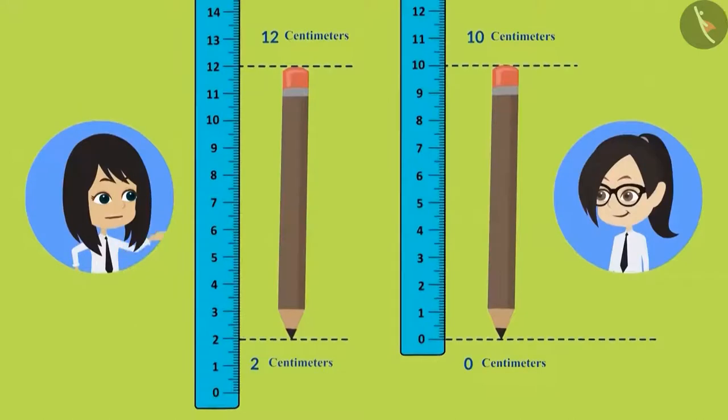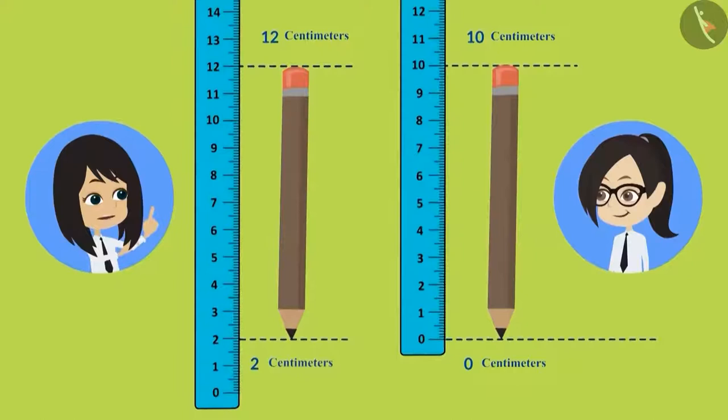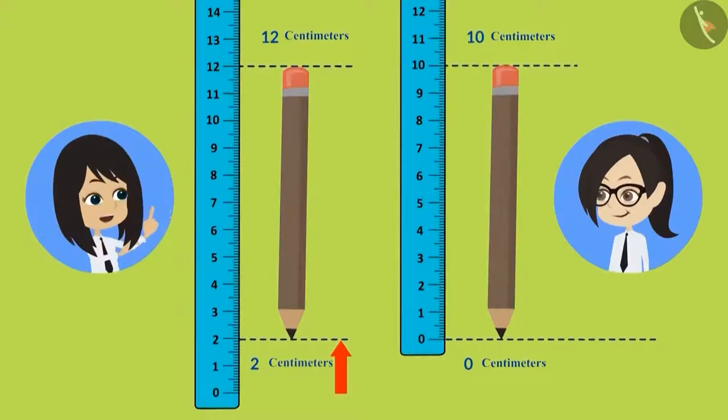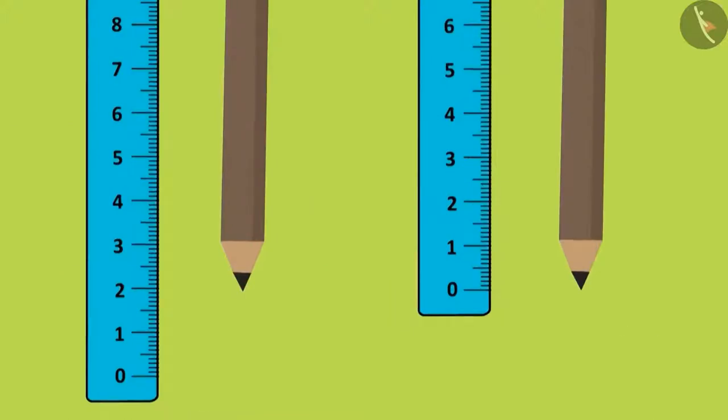Oh! I understand now. The problem with keeping the pencil at 2 centimeters is that there is no pencil from 0 centimeters to 2 centimeters, and I included that length as well in the measurement. Now I will correct it. I will keep the pencil at 0 centimeters.